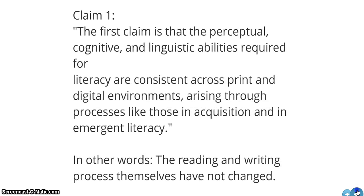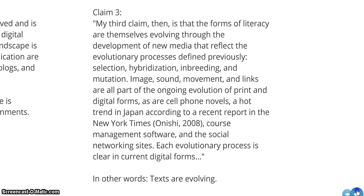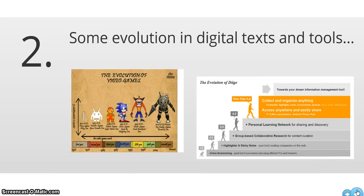Quickly skimming through these claims — you can read them on your own. Here are some examples I pulled off the internet, just to get you thinking about how digital tools and texts are evolving and how we can think about technology changing through evolutionary processes.